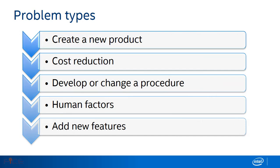Engineering problems can be grouped into various types. The one most people think about involves creating a new product. Engineers are also involved in the modification of existing products, as business is always looking for a way to do things faster, cheaper, and at the same time better — a good example of this is personal computers. Engineers are also involved in developing and improving a procedure or process, and they must take into account human factors. The product should improve the life of the user, and the goal is to maintain current design and add new features.